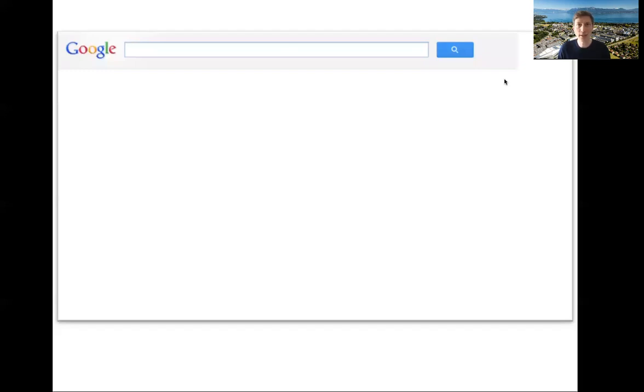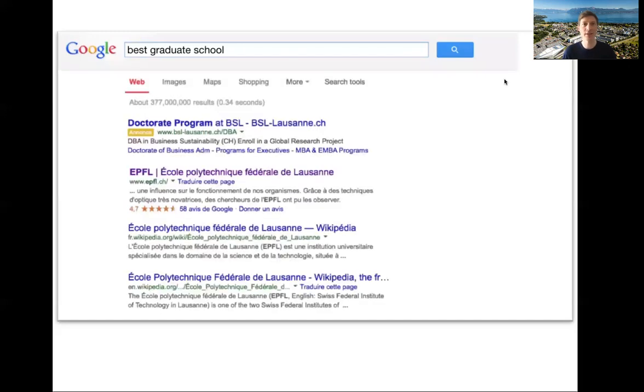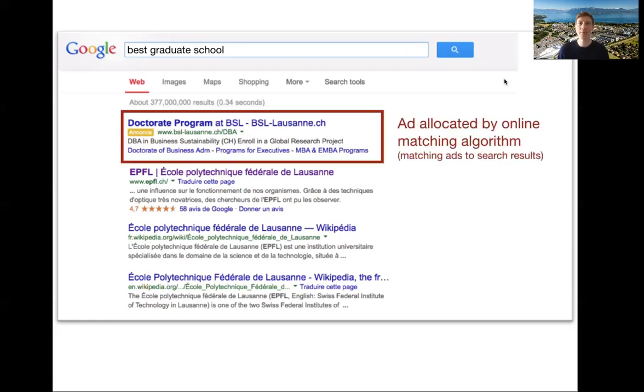You go to Google, you search the best graduate school, you click the search button, you get your results. Here we can see that there's a lot of results that make perfect sense, except maybe the first one. We don't know that school. And this school was assigned there by an ad allocation, by an online algorithm that makes ad allocation, basically it matches ads to search results.